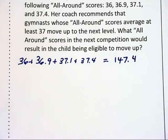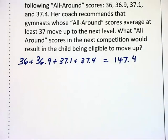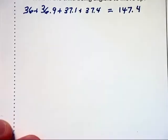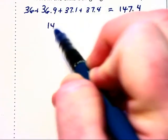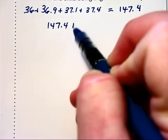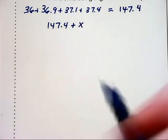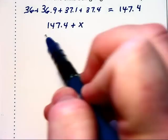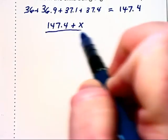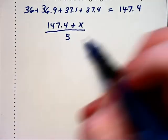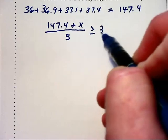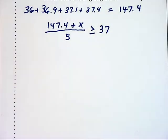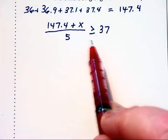Now, if we wanted to know her current average, we would just divide that 147.4 by 4. But instead, we want to take this 147.4, we want to add in some unknown score for the next competition, at which point she will have 5 scores. We will divide that by 5 and make sure that she then has at least 37 points altogether.